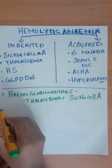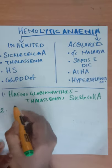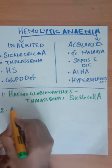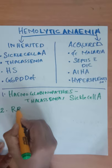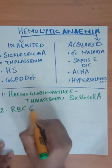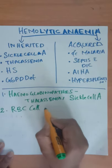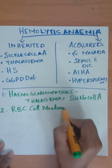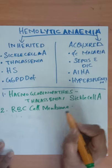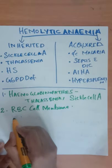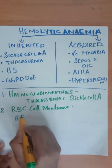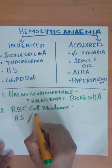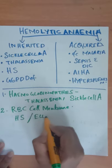The second reason is due to a problem in the RBC cell membrane — an RBC cell membrane defect. Examples include hereditary spherocytosis or elliptocytosis.